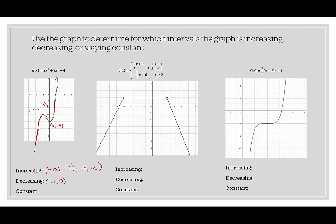For the second graph, we have h(x) given by a piecewise function. It is increasing since the pieces are linear functions, and the domain x < −4 indicates it goes from negative infinity up to negative four. From negative four to two, it's staying constant, so we write the interval negative four to two.